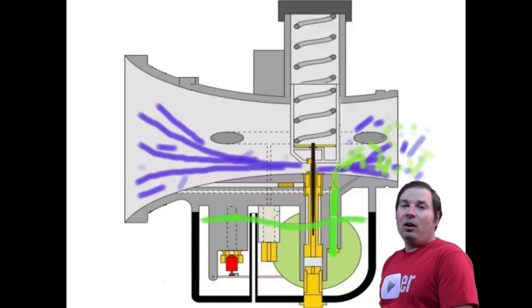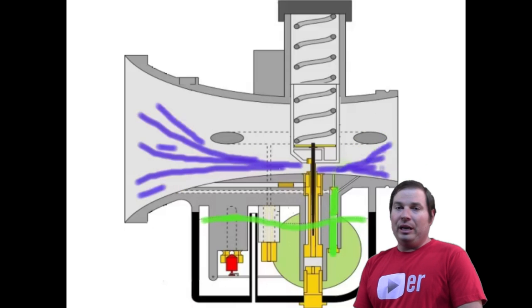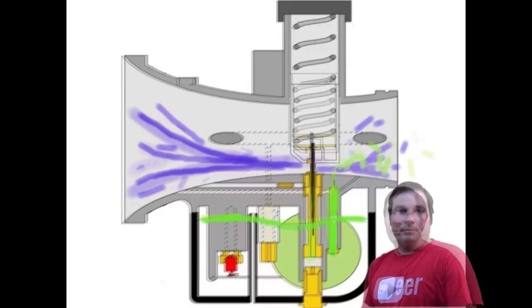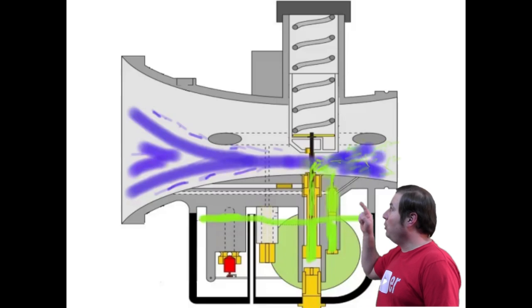At this point, the idle mixture screw is doing nothing for the jetting of the carburetor. Now as the carburetor slide opens further still,